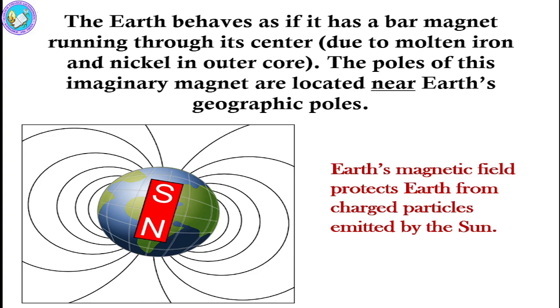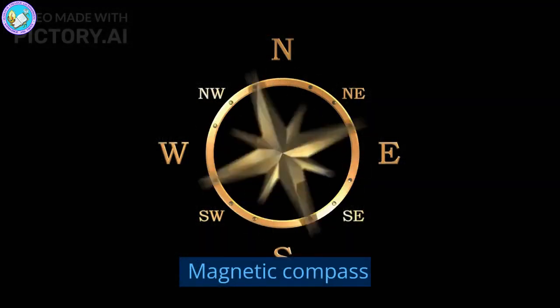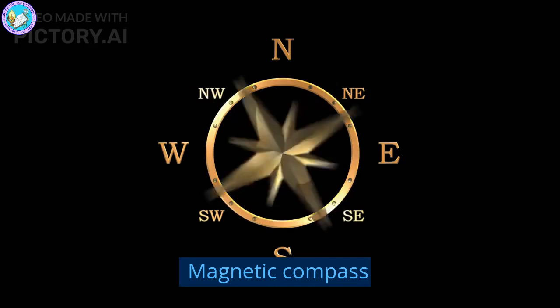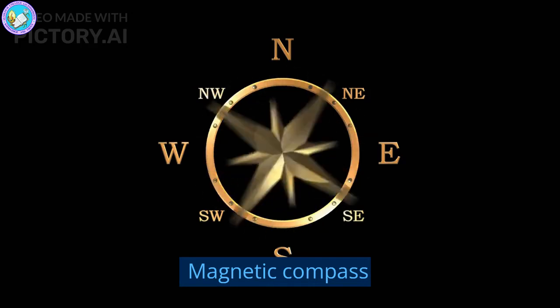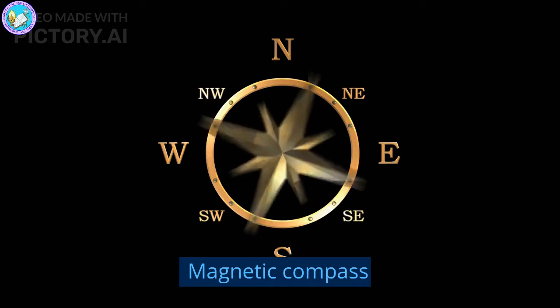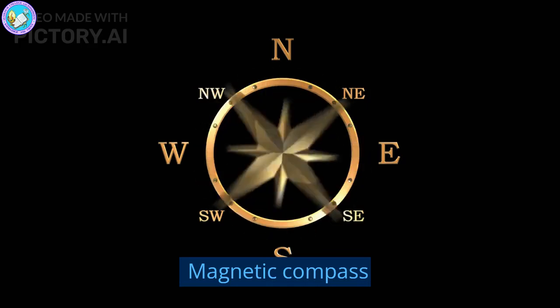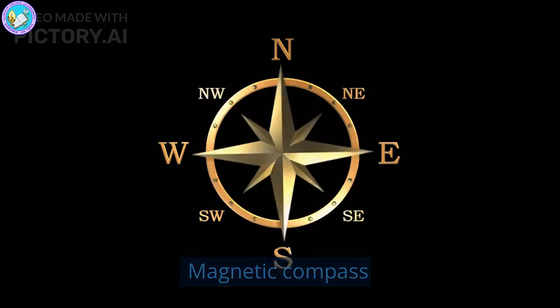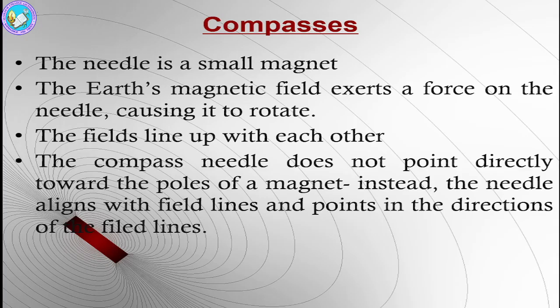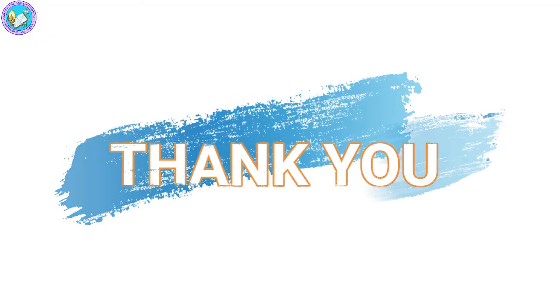This field can also be explained using another example, which is compasses. The needle of a compass is a very small magnet, and the Earth's magnetic field exerts a force on the needle, causing it to rotate. When it lines up, it correlates with each direction towards the poles of the magnet, and the needle will align in different directions — this is said to be the magnetic field, consistent for compasses. Thank you.